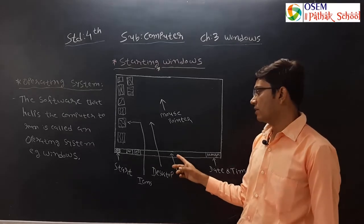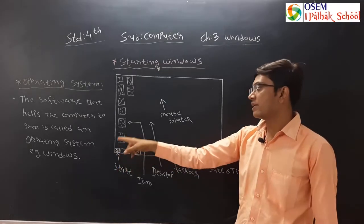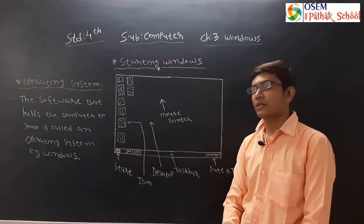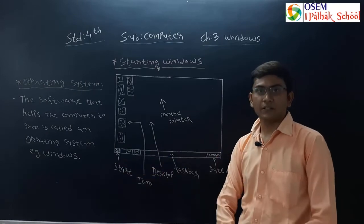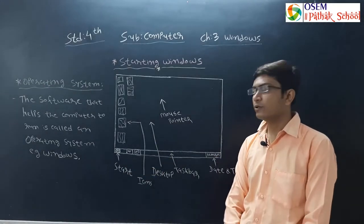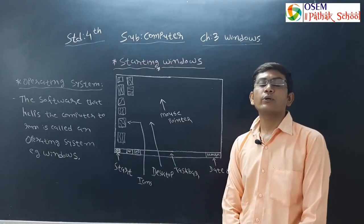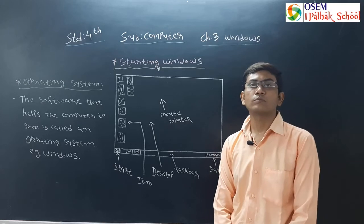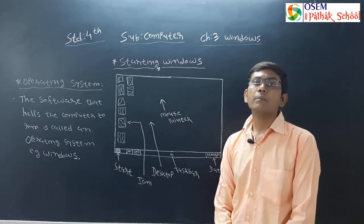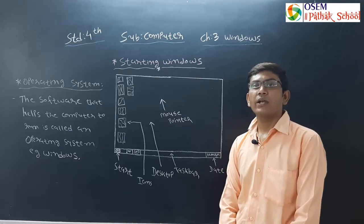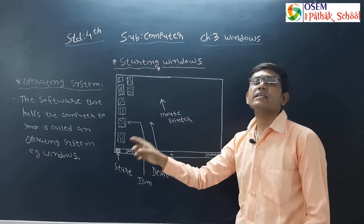At the left side of the taskbar, you can see one round button. This button is known as the start button. When you click on the start button, you can see the start menu. A list of commands is called a menu, and when you click on the start button, you can see the start menu.